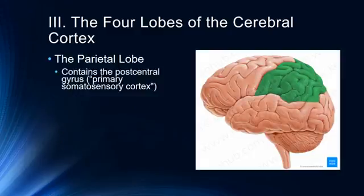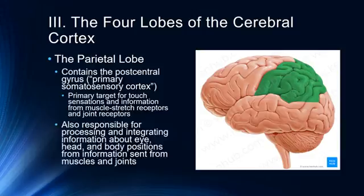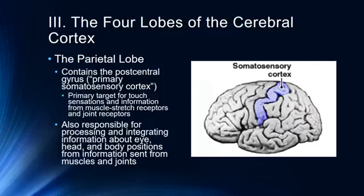The parietal lobe contains the postcentral gyrus, which is the primary somatosensory cortex located just past the central sulcus. It is our primary target for touch sensations and information from muscle stretch receptors and joint receptors. It's also responsible for integrating information about eye, head, and body positions, providing sensory-motor integration — understanding where our body is in 3D space. The somatosensory cortex is laid out in a homunculus, or map of the body, where some areas are over-represented, resulting in what's called cortical magnification.